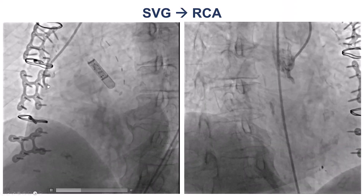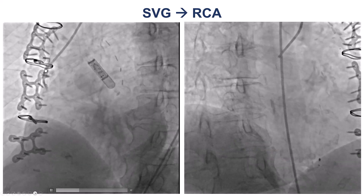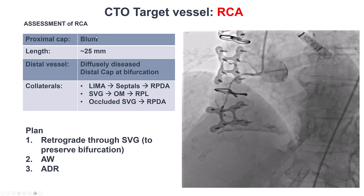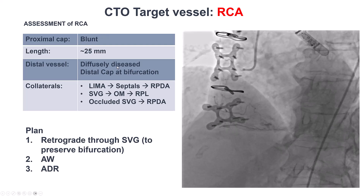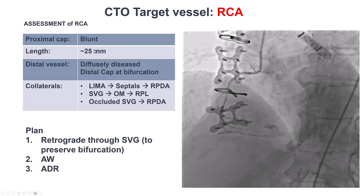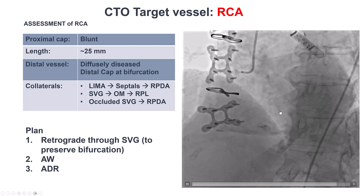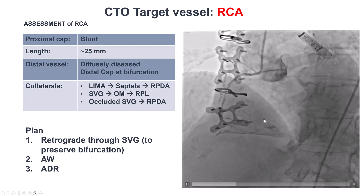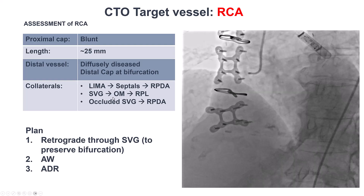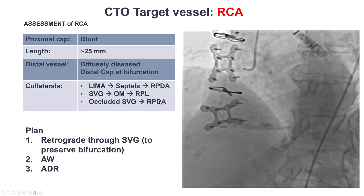This is the occluded saphenous vein graft. The occlusion is shortly after the aortic anastomosis. To summarize, we have a CTO of the right coronary artery with a blunt proximal cap. Length was difficult to assess without dual injection, but seemed to be about 25 millimeters. The distal vessel was diffusely diseased with a bifurcation on the distal cap, and there were epicardial collaterals and this occluded saphenous vein graft to the PDA.